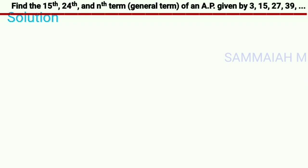Find the 15th, 24th, and nth term, i.e., the general term, of an AP (arithmetic progression) given by 3, 15, 27, 39, and so on.